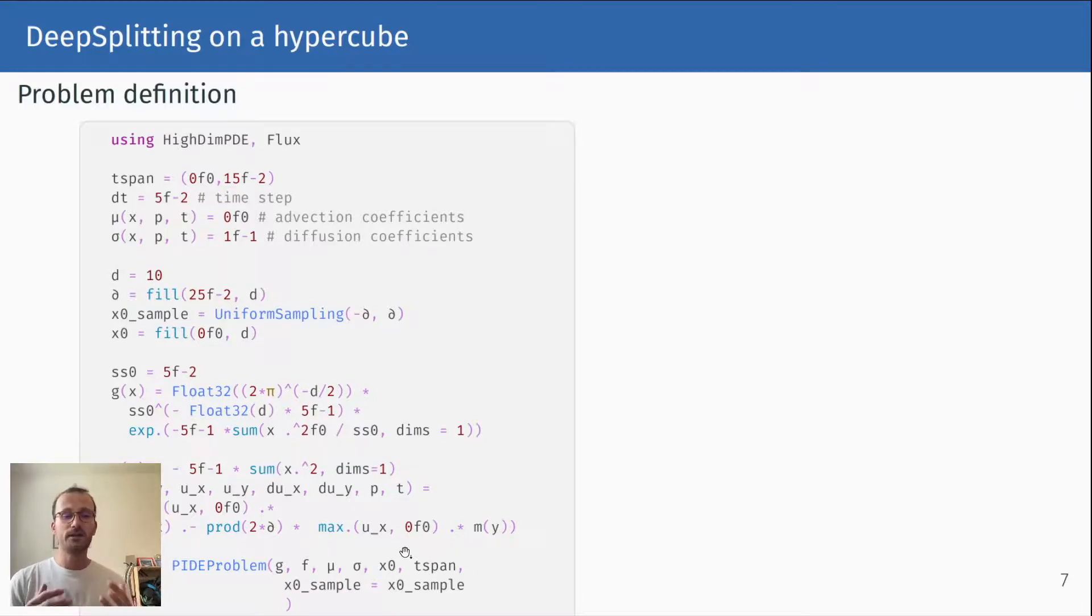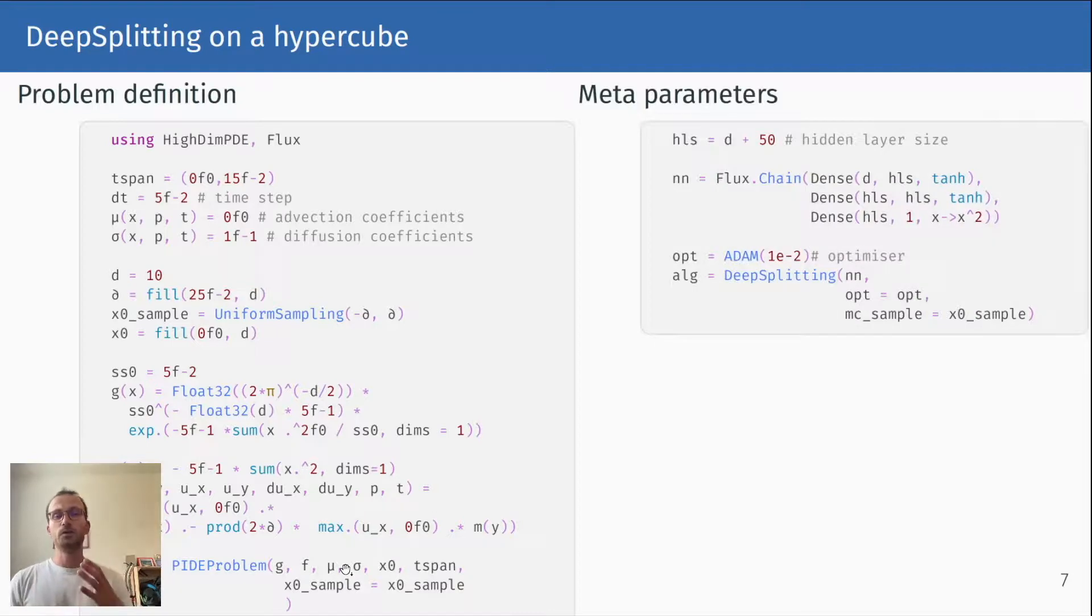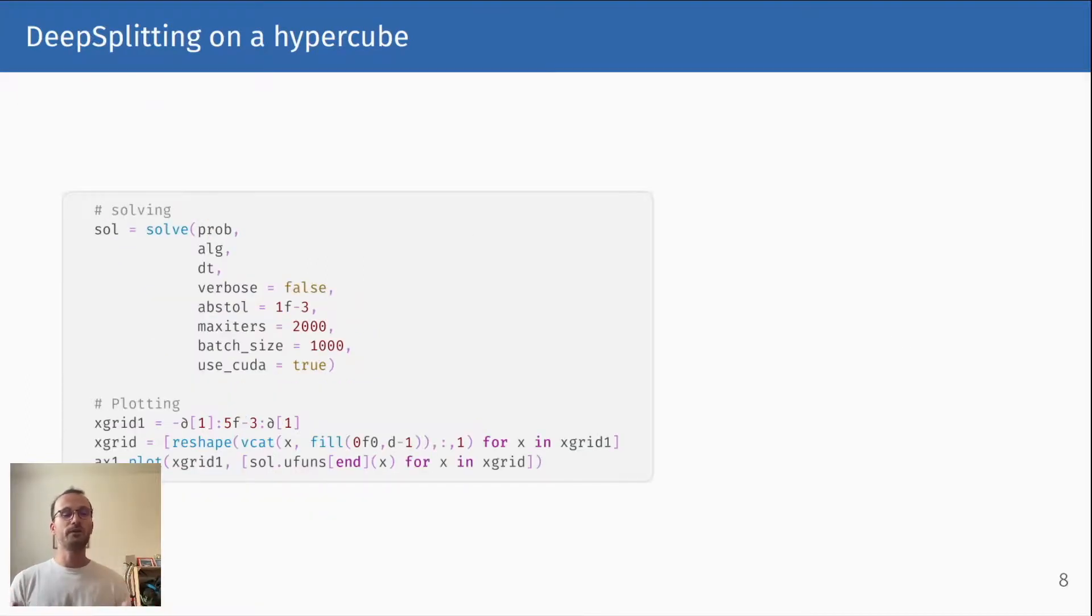As a second step, you need to provide information about the meta-parameters that you want to use. Here we use the deep-splitting algorithm, which needs a neural network. Here we define a neural network with three dense layers. We decide on the optimizer. And off we go, we can construct the algorithm object. That's all you need to use the solve function.